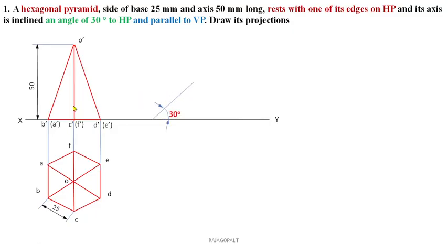Now you know the length of O', C', F'. That length has to be transferred to this 30-degree inclination line. Before that, you have to reproduce the same simple position front view — B', A' to D', E'. You can measure using a scale and draw the midpoint exactly on this inclination line.